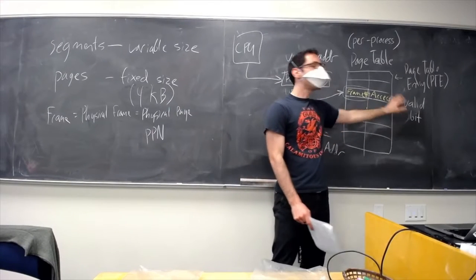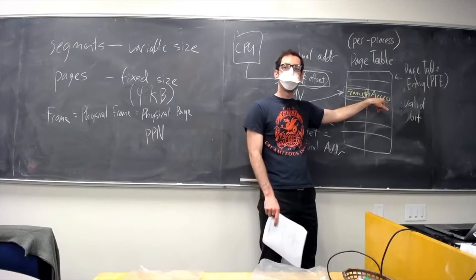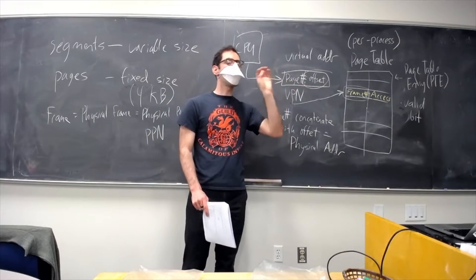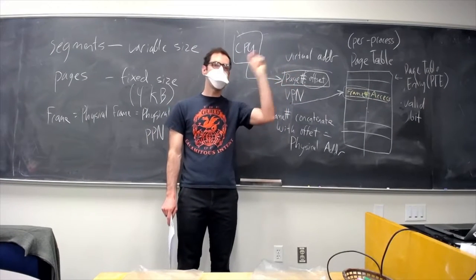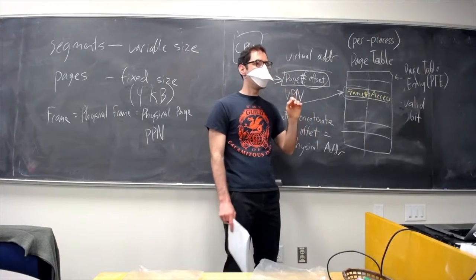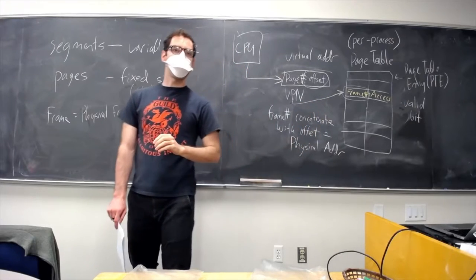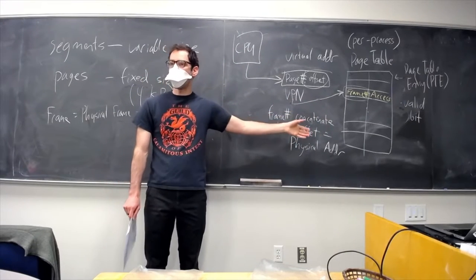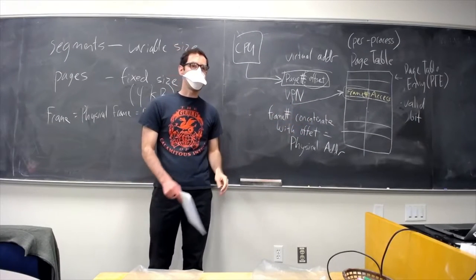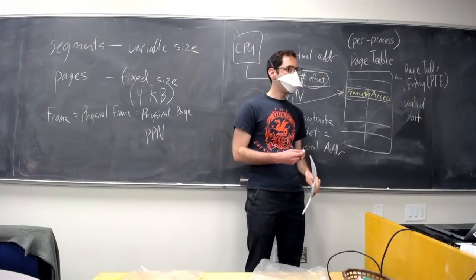Just like for segments, we track permissions per page — can the process read it, write it, or execute instructions from it? This valid bit and permission information are both parts of the page table entry.